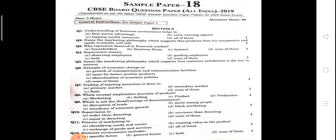Next question: the example of economic change is what? Options are: growth of transportation and communication facility, taste for better quality product, liberalization of economic policy, or none of these. The fluctuation in price of transportation and communication affects economic change. So the answer is number one — growth of transportation and communication facility.